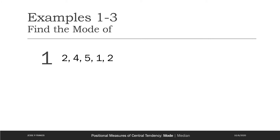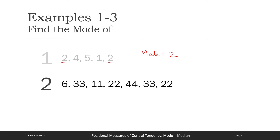Let's look at some examples. The first example: there are two 2s, and 2 is the only number with frequency 2; the rest have frequency 1. Therefore mode = 2. The next example: 6 has frequency 1, 33 has frequency 2, 11 has frequency 1, 22 has frequency 2, 44 has frequency 1. Therefore mode = 33 and 22 — it's bimodal.